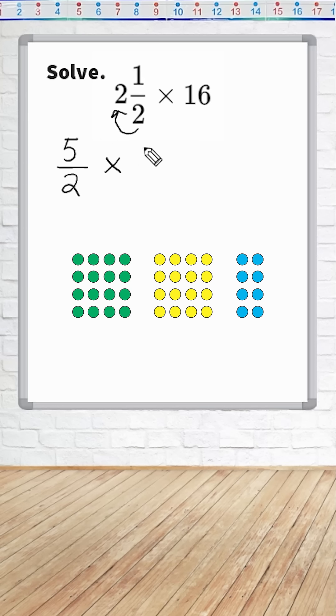And we multiply that by 16. Now whenever you have a whole number in a fractional problem, you should rewrite that whole number as a fraction simply by putting in 1 as a denominator. 16 divided by 1 is still equal to 16. Now we can just multiply straight across.